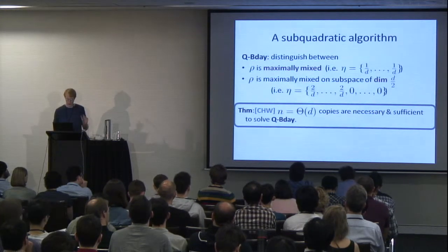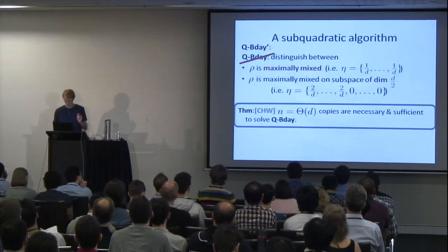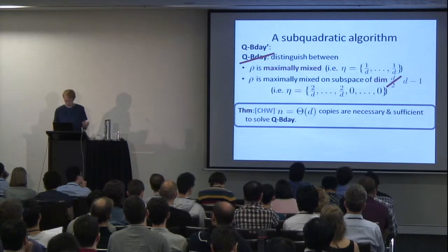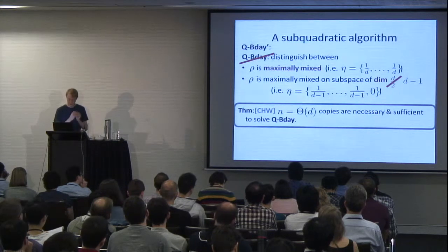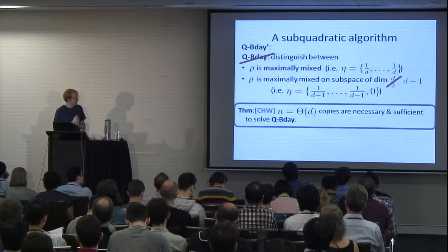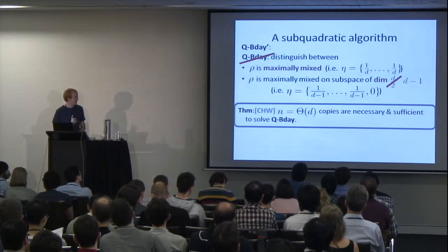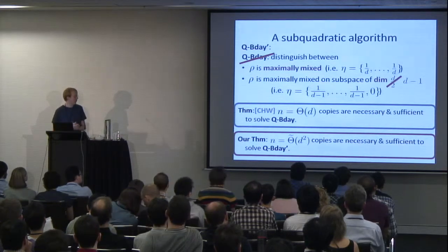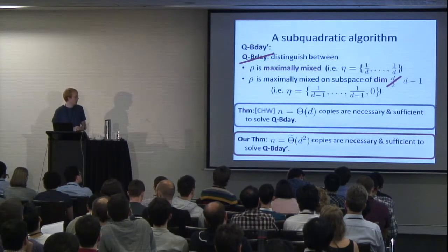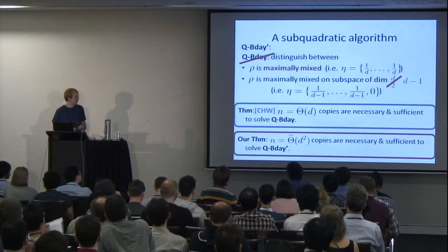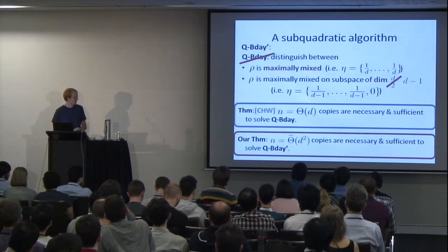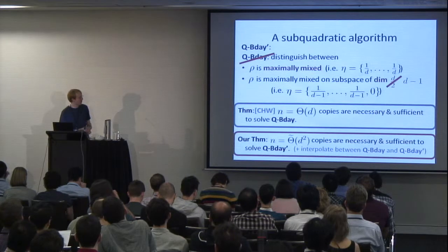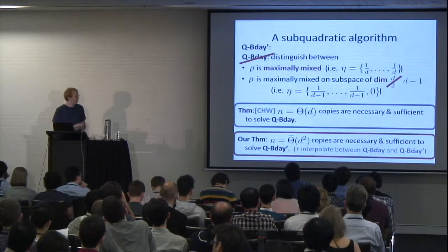Our second result considers a variant I'll call QB-Day prime, where the first case stays the same but in the second case you replace D over 2 with D minus 1. So the spectrum in the second case is uniform on D minus 1 entries and zero on the last one — it's just like the original problem except harder, since the two cases are closer to each other. Our second theorem shows that for this problem, D squared copies are both necessary and sufficient. So we show that for a harder natural variant, we get a harder lower bound. We also interpolate between these two results — instead of D minus 1 you could do D minus 2 or D minus square root D — and we get basically tight bounds for everything in between.